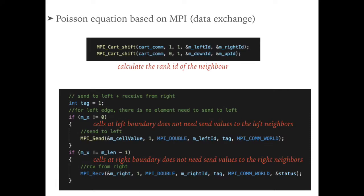Before exchanging the data, we need to calculate the rank ID of the current cell. This operation can be achieved by MPI Cartesian Shift. We discussed this in detail in the previous video, and please check the link below if you are unfamiliar with this.